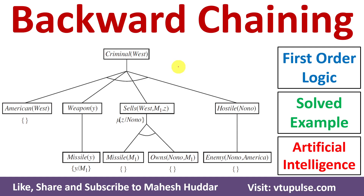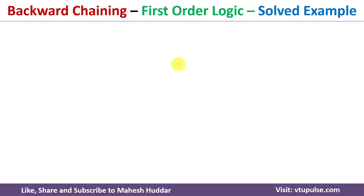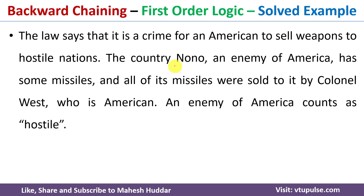Welcome back. In this video, I will discuss how to use backward chaining to prove a given first order logic statement, with the help of a simple example in artificial intelligence. I will be considering the following problem definition. In the previous videos, I have already discussed how to convert this problem definition into first order logic. The link for that video is given in the description below.